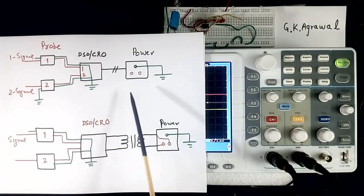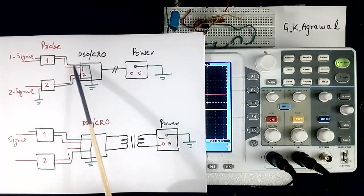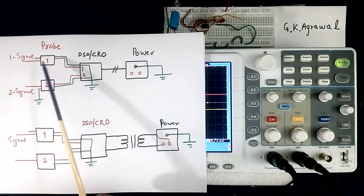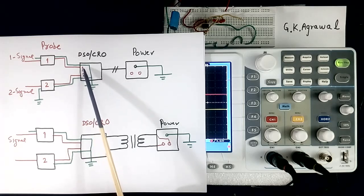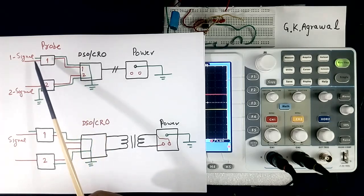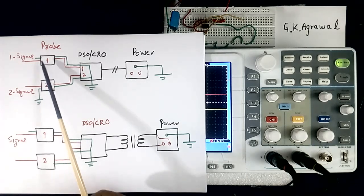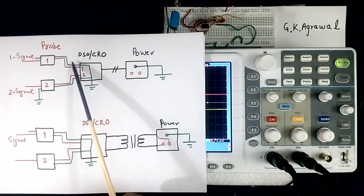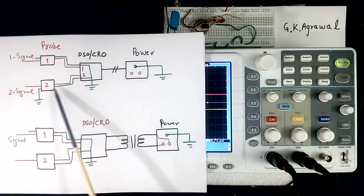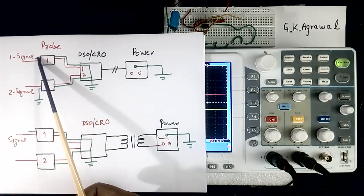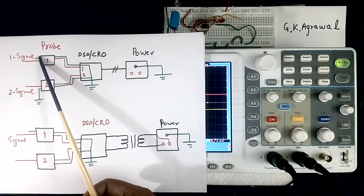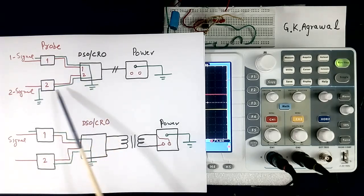Now I will tell first about earthing. This is a power point. This is a CRO. Two probes are connected — probe 1 and probe 2 — with channel 1 and channel 2. Both probes have one common point, shown here in green color. This common point is shorted inside the CRO, meaning the voltage of these two points should be the same. If they are different, then shorting will occur.